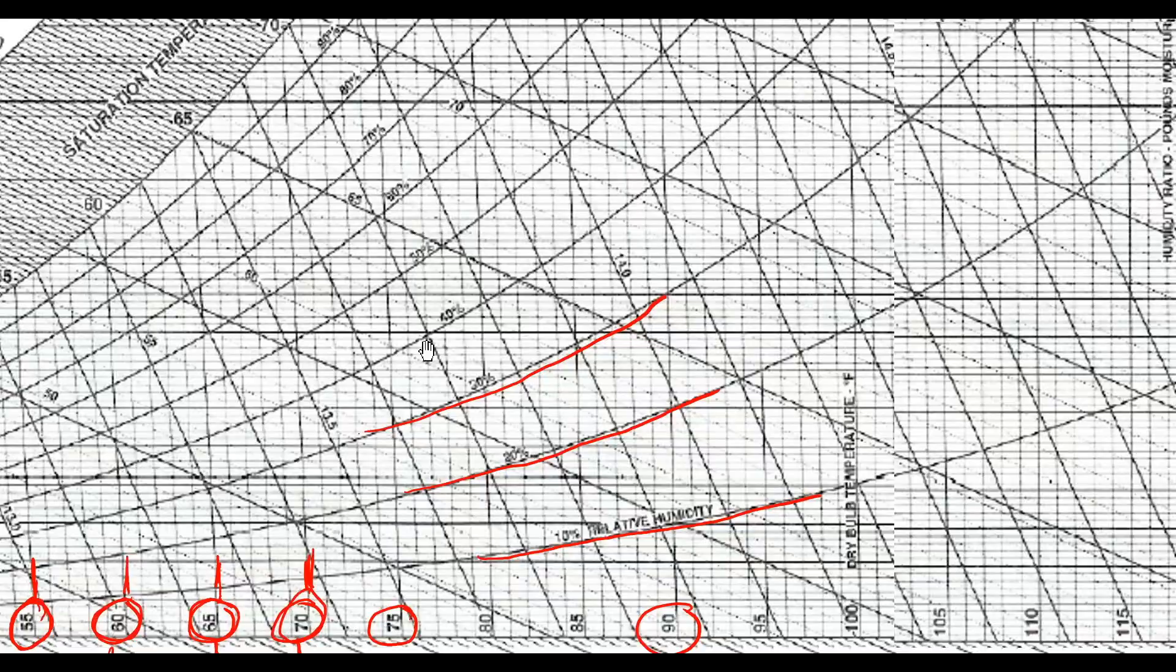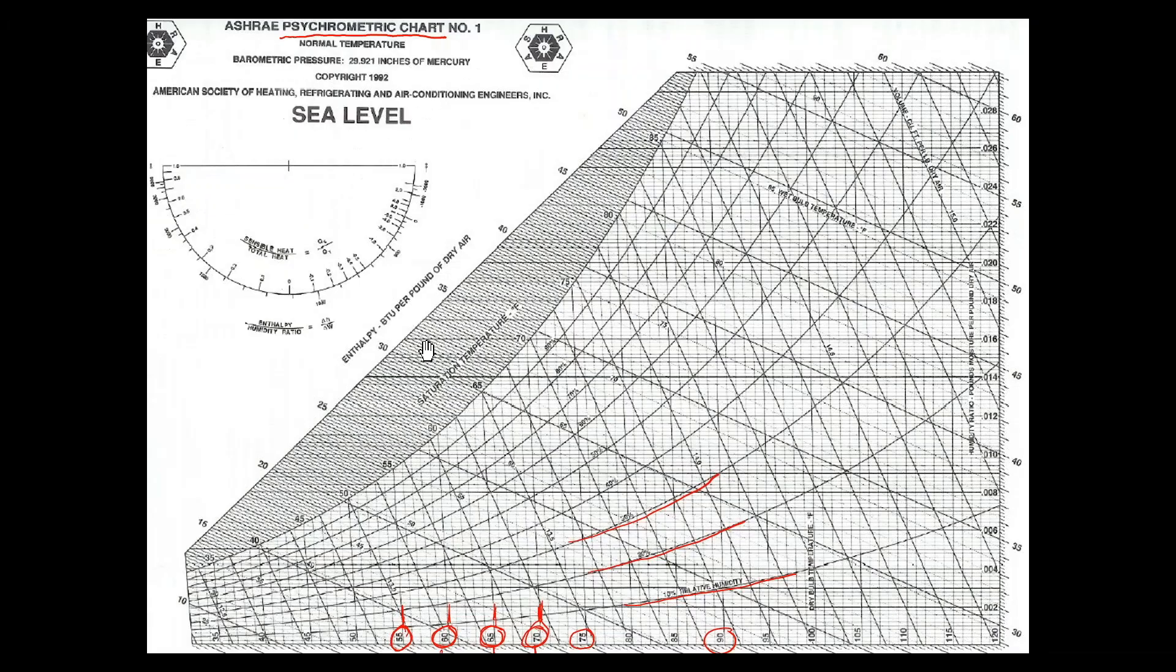Now the final axis we're really interested in is this one over here that's called the enthalpy. That's the total energy content of the air, and the units here are 25, 30, 35, 40. All of these are in BTU per pound of dry air. Now if you're overseas, out of the United States, it would be kilojoules per kilogram.